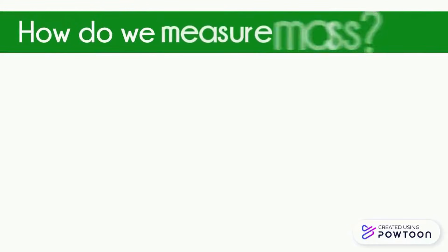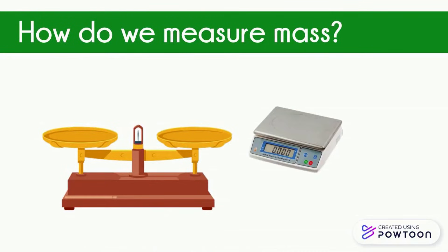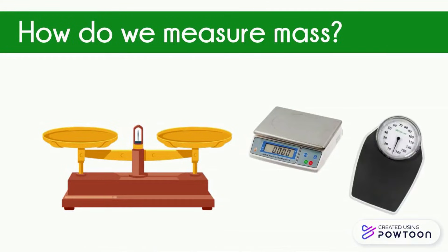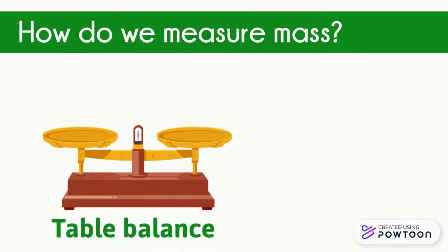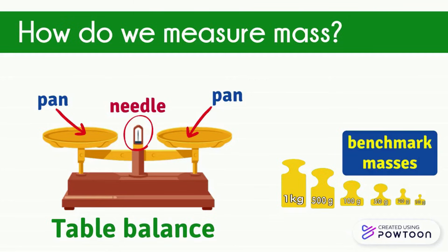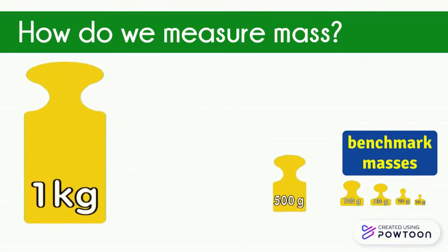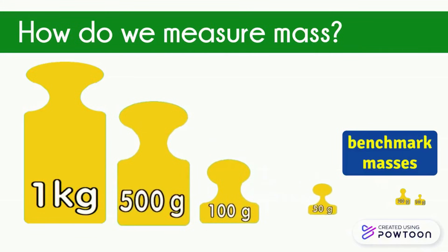But how do we measure mass? To measure the mass of an object, we need a measuring tool called a table balance. We can measure mass either with an electronic or digital scale, which directly displays the mass, or with a table balance scale. The table balance scale is a two-pan balance with a needle in the middle, and it has benchmark masses to determine the weight of an object. On each benchmark, there is a mass number written on it — we have 1 kilogram, 500 grams, 100 grams, 50 grams, and so on.